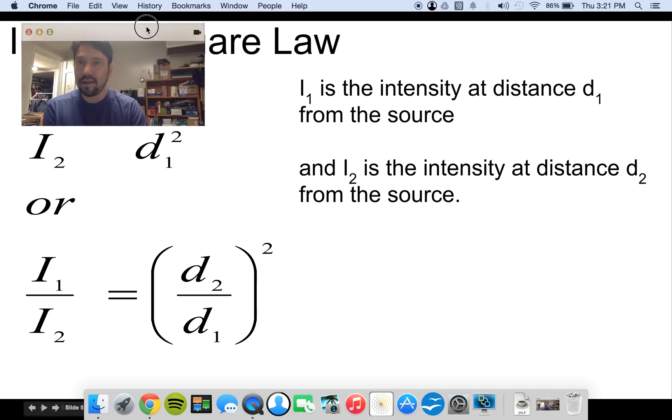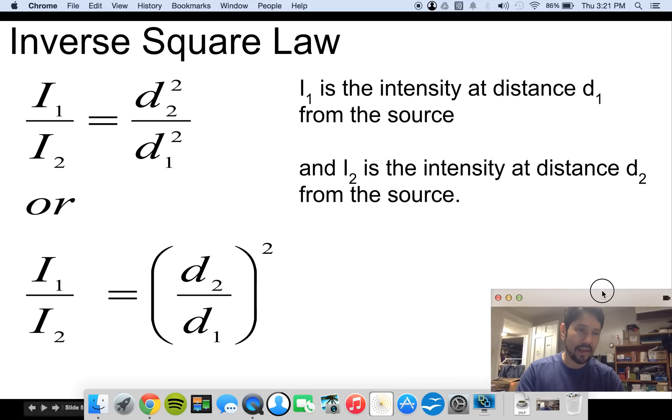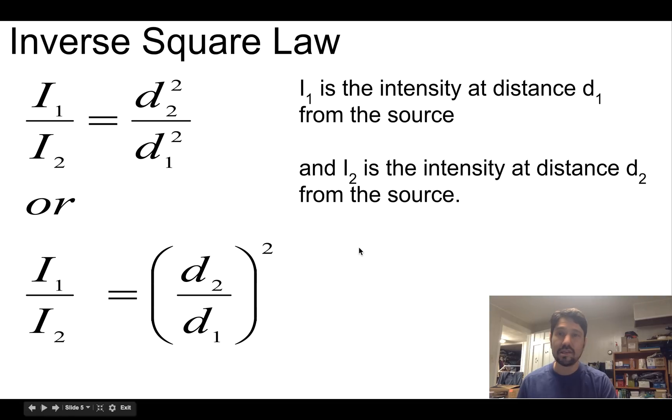All right. Let's scooch me back down here to my corner. And the formula that you'll use is intensity 1 over intensity 2 equals distance 2 squared over distance 1 squared. And actually, I prefer this formula down here. I1 over I2 equals D2 over D1 squared.